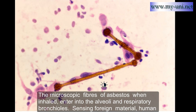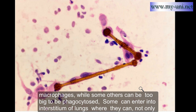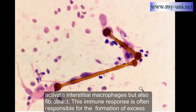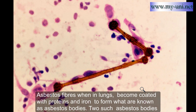When microscopic asbestos fibers are inhaled, they enter the alveoli and respiratory bronchioles. Sensing foreign material, the human body activates the immune system. Macrophages are deployed — some small asbestos fibers are engulfed by alveolar macrophages, while others can be too large to be phagocytosed. Some fibers can enter the interstitium of the lungs, where they activate interstitial macrophages and fibroblasts. This immune response is often responsible for excess collagen production by fibroblasts, resulting in interstitial thickening and fibrosis.